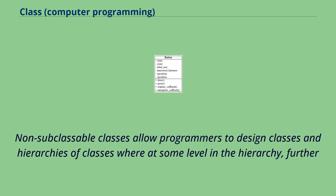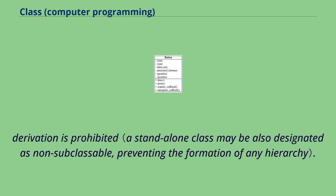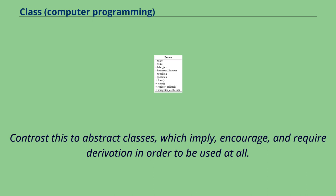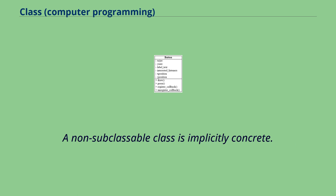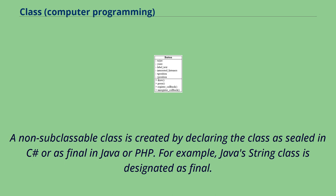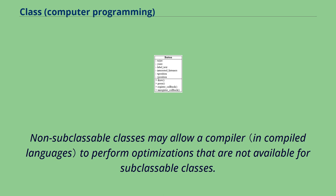Non-subclassable classes allow programmers to design classes and hierarchies where at some level further derivation is prohibited. Contrast this to abstract classes, which imply, encourage, and require derivation in order to be used at all. A non-subclassable class is implicitly concrete, and is created by declaring the class as 'sealed' in C# or as 'final' in Java or PHP. For example, Java's String class is designated as final. Non-subclassable classes may allow a compiler to perform optimizations that are not available for subclassable classes.